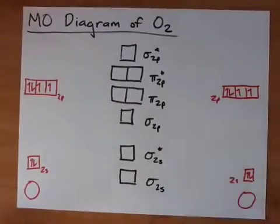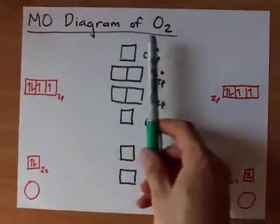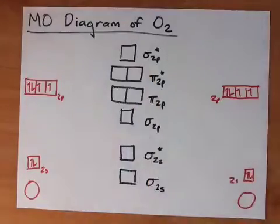All right, today together we are going to draw the molecular orbital diagram for an oxygen molecule. That's O2.